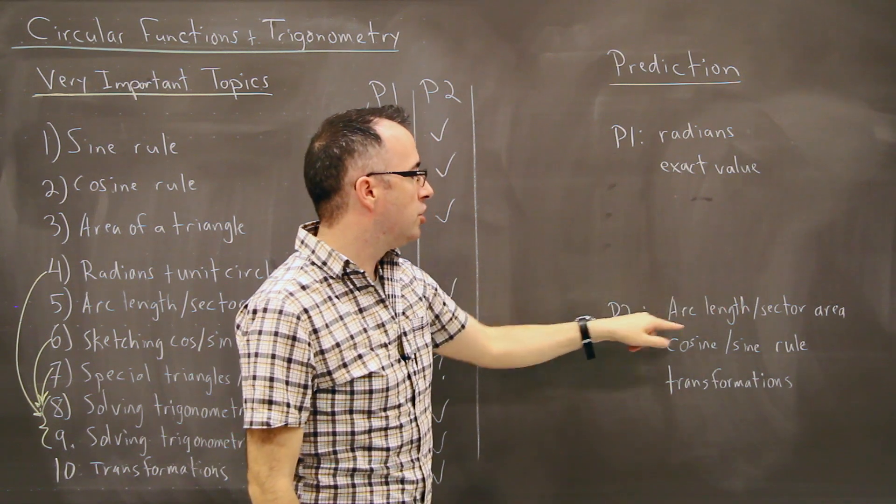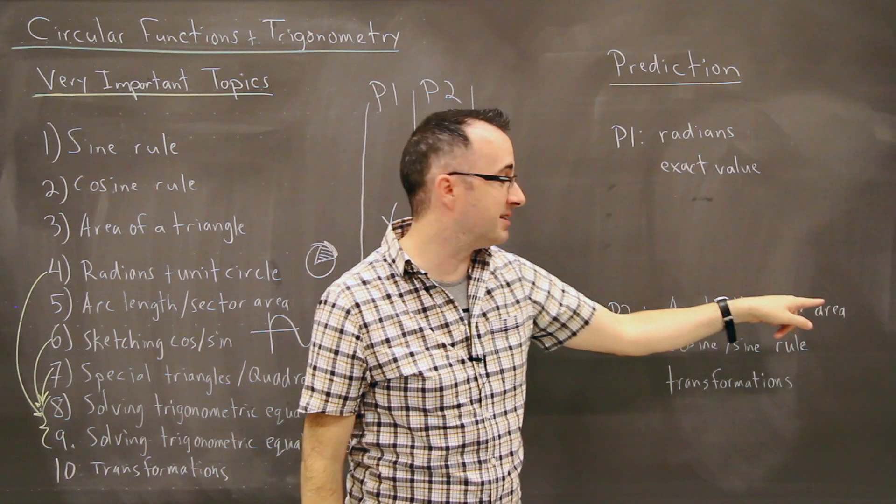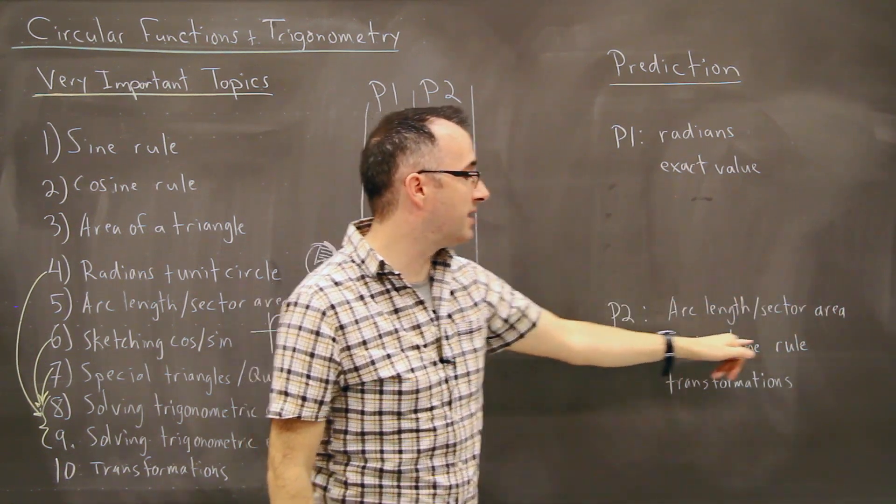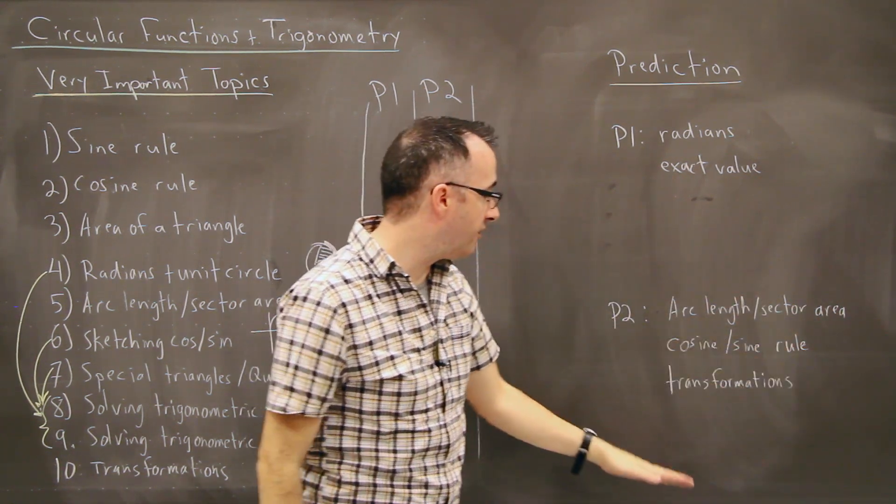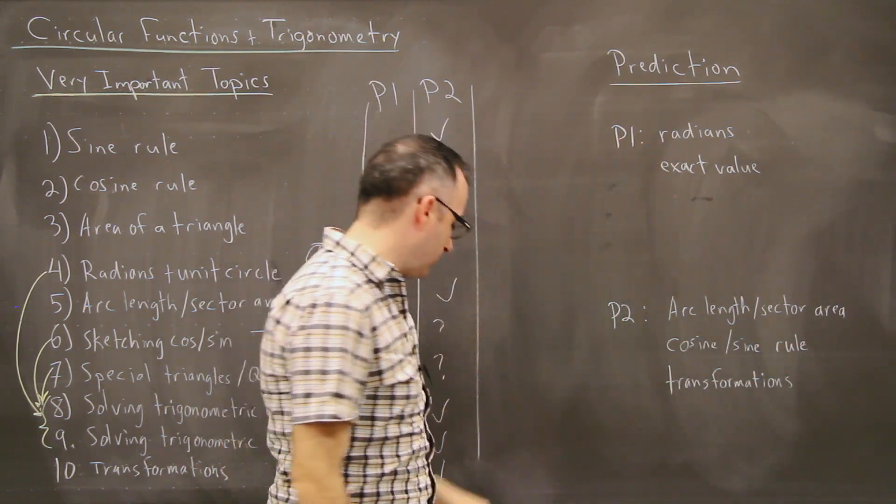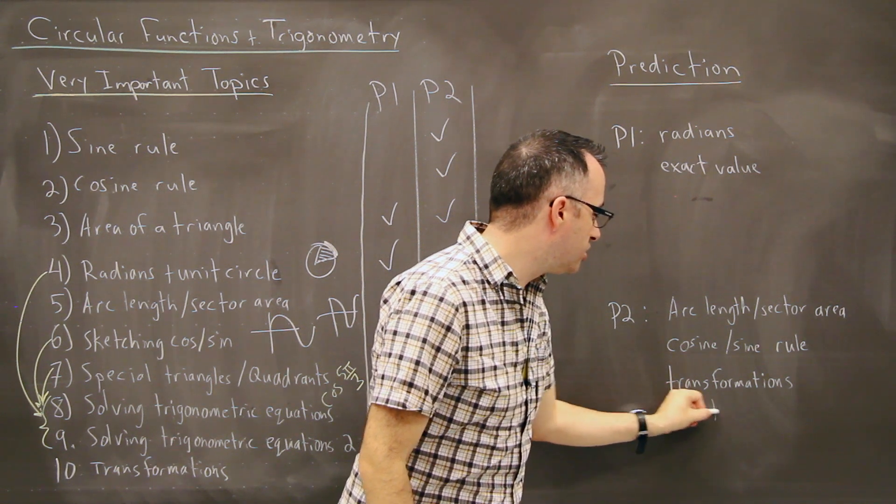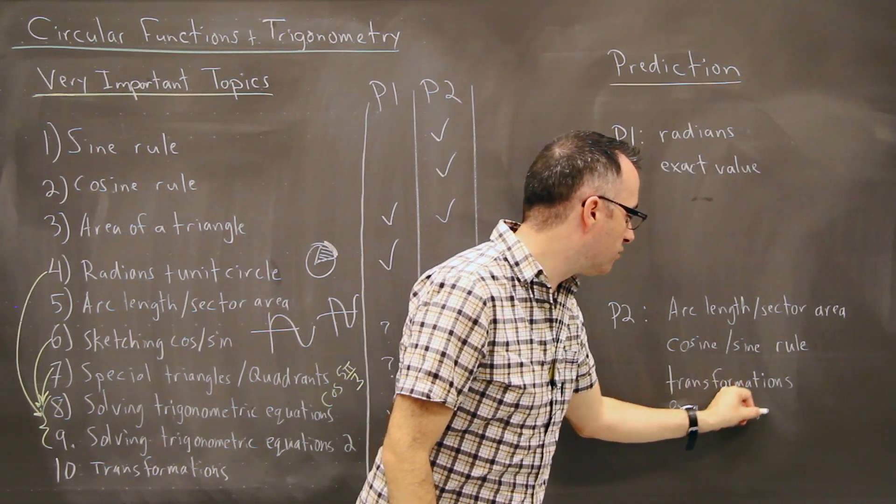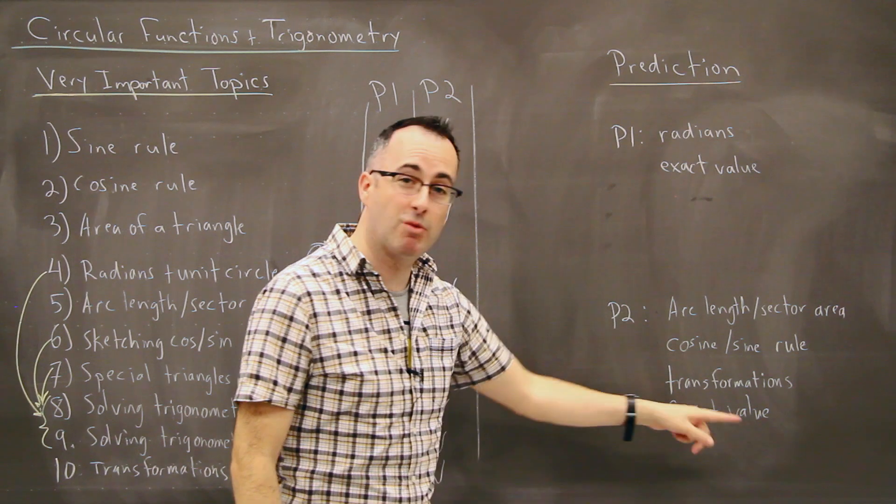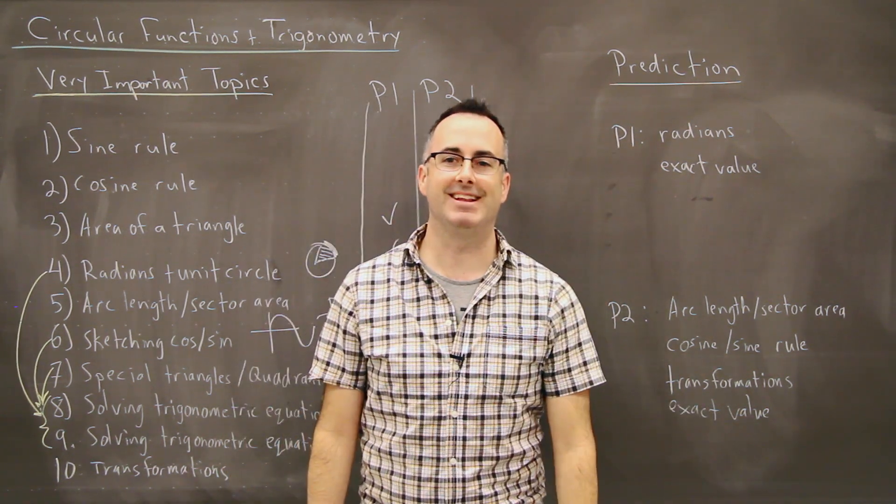On paper two, you're most likely going to be asked for arc length and sector area, which is awesome. It's usually one of the easiest questions on the exam. But then again, you have cosine and sine rule, which are needed. Those come up pretty often. Transformations show up, as well as, of course, this exact value stuff. I should put that in as well. So we also have exact value. Those show up very often there as well. It's just that these are easier when you get to use a calculator. It's a lot harder when you don't get your calculator. Let's get started.